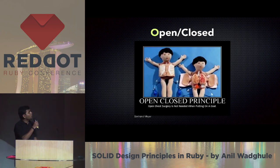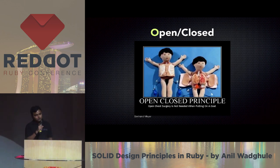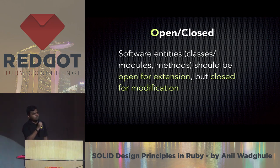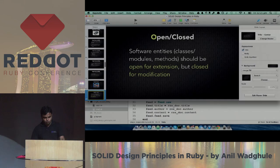The next principle is Open-Close. As the image shows, to wear a coat you don't have to do heart surgery. The principle says software entities — classes, modules, methods — should be open for extension but closed for modification. It can be achieved using inheritance and composition.